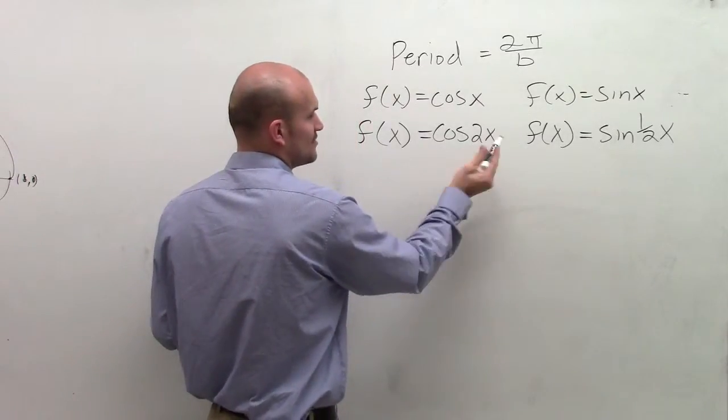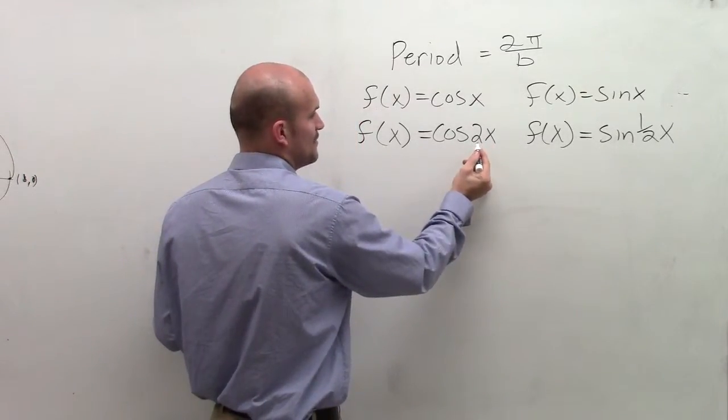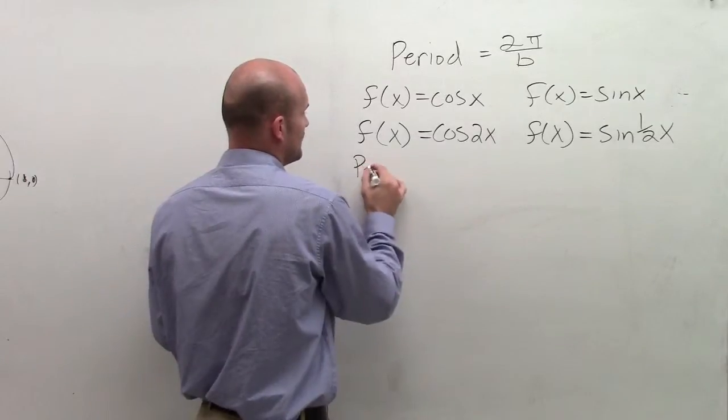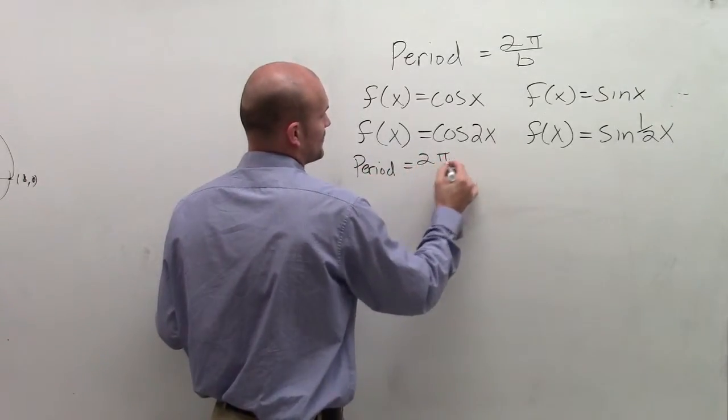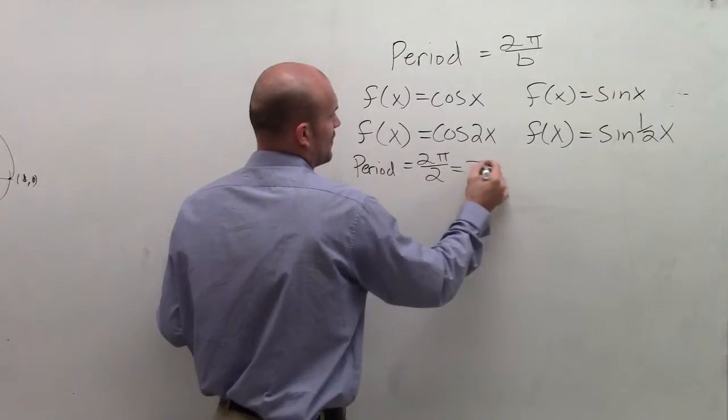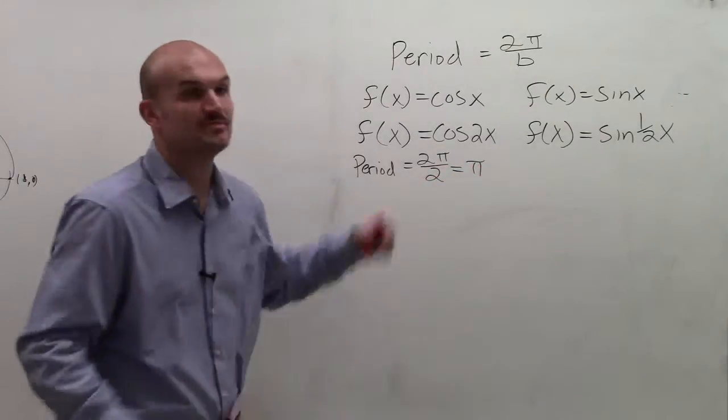If you look at this, in this form for cosine, right now my period is now going to be, for this one, my b value is 2. So if I want to find the period, all I'm going to do is take 2 pi and divide it by 2. Therefore, my new period is now going to be pi.